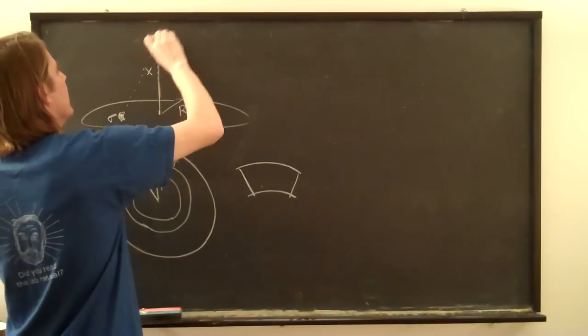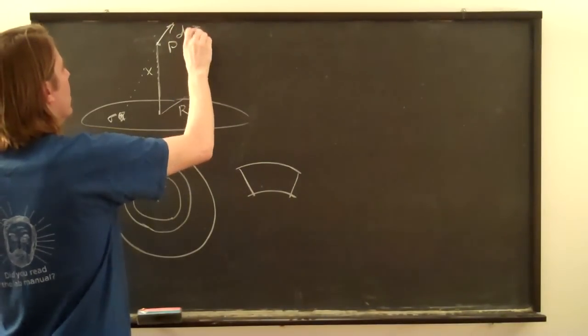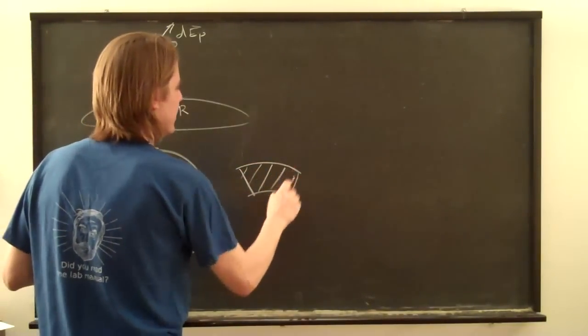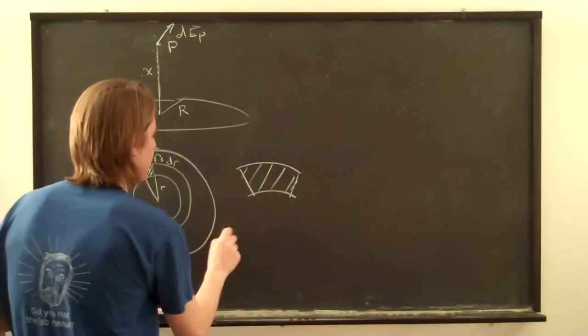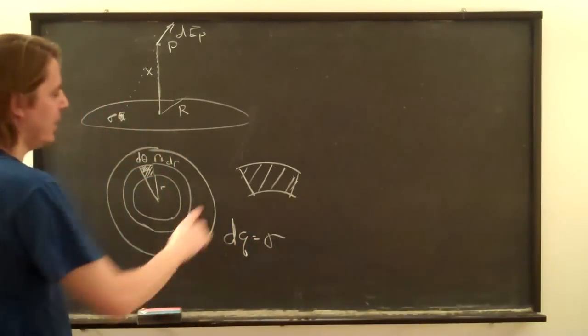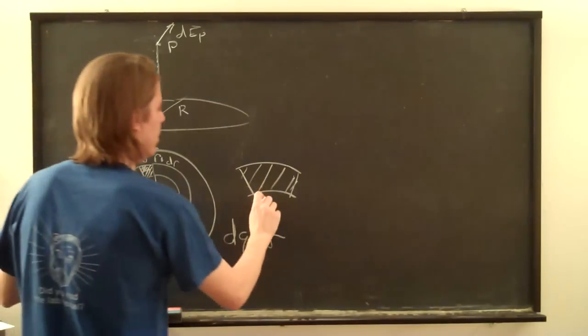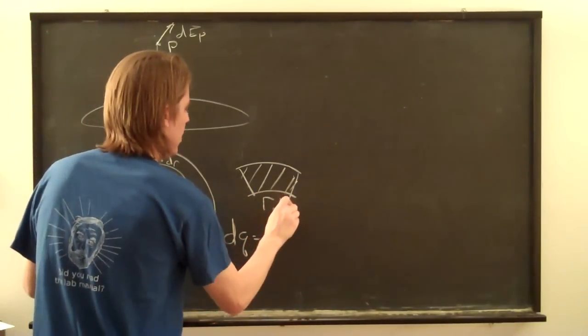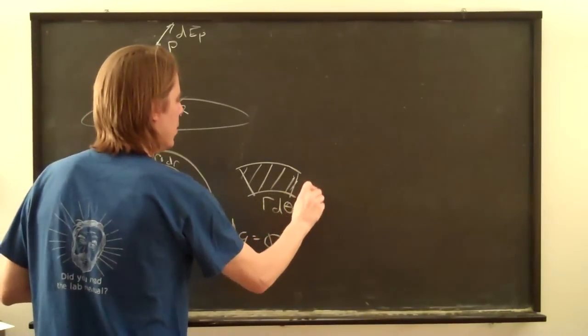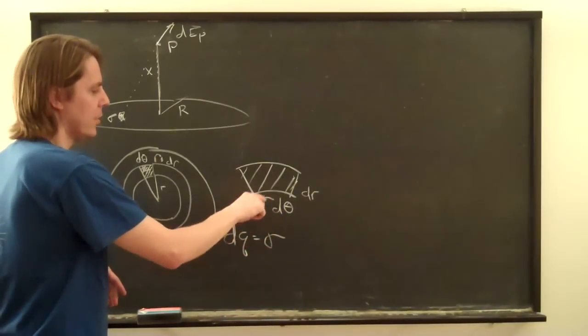So if we were to blow it up, it would look kind of like this, where we have this element of area. Well, what is the area? The length across is basically what radius you're at R times D theta. That's the arc length across there. And then the width here is DR.